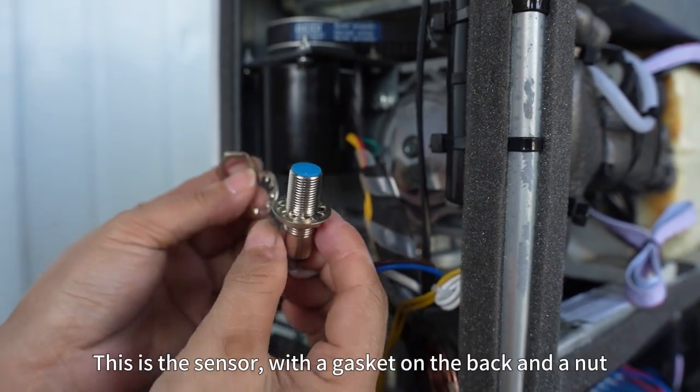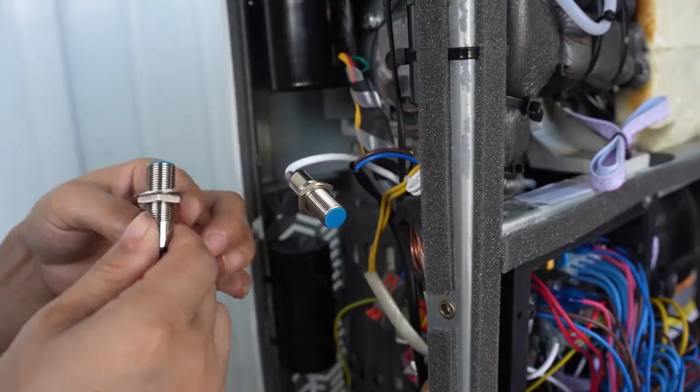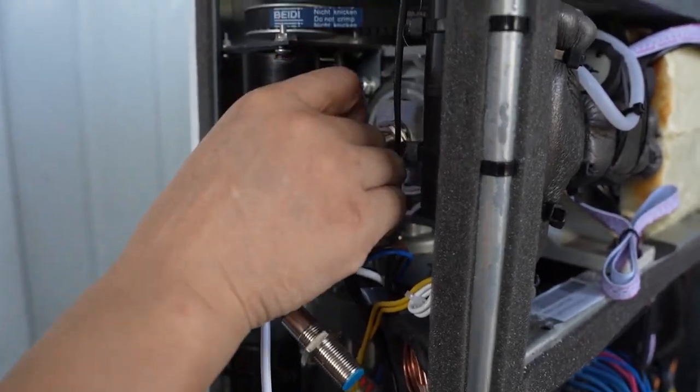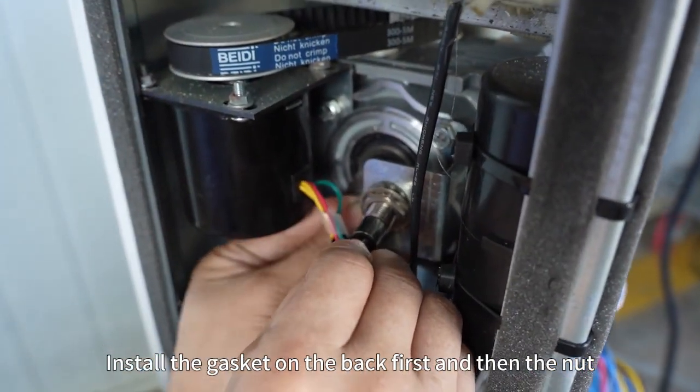This is the sensor with the gasket on the back and the nut. Install the new sensor by installing the gasket on the back first and then the nut.